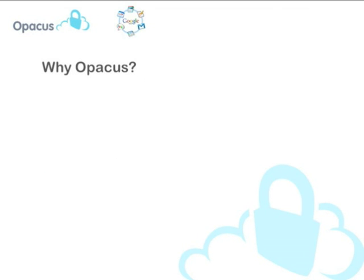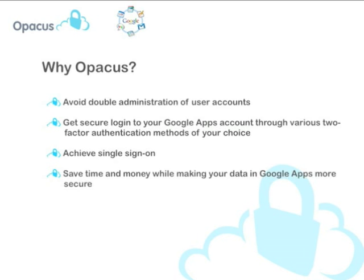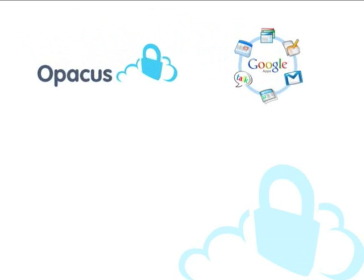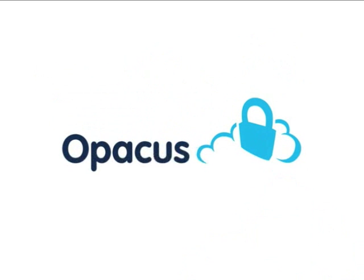So why do you want to choose Opicus? All in all, with Opicus you avoid double administration of user accounts with provisioning, get secure login to your Google Apps account through various two-factor authentication methods of your choice, achieve single sign-on, and save time and money while making your data in Google Apps more secure. For more information, go to securethecloud.com. Thank you for your time, and now you know. Opicus secures the cloud.